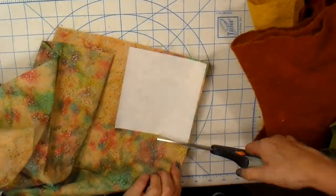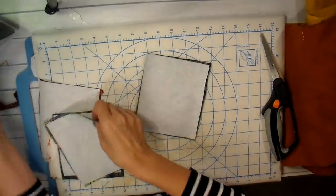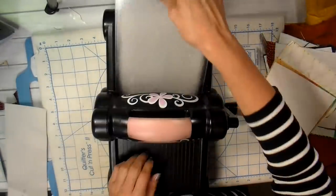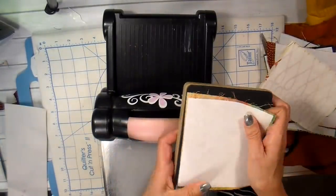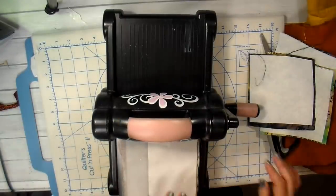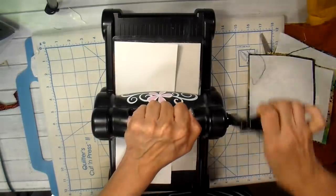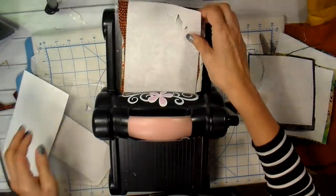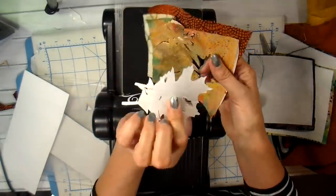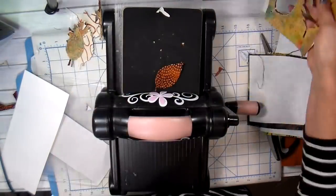I just cut some heat and bond light the same dimension as my Bigz die and just iron that on the back of all six of my batik fabrics. And now running that through my big shot, just laying those pieces right on top of my die making a sandwich. I am using card stock for a shim just to make sure that this cuts all three layers. I find that three layers work really well for me if I have this heat and bond light on the back and cut all three layers at once.